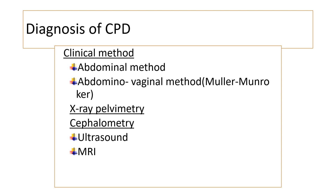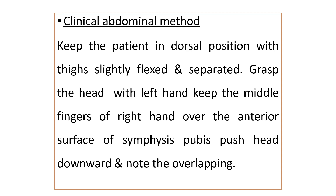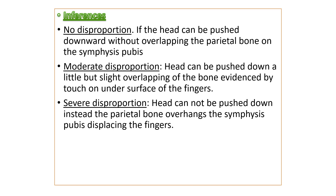In the clinical method, the first one is the abdominal method. In the clinical abdominal method, keep the patient in the dorsal position, slightly separate and flex the thighs, and grasp the fetal head using the left hand of the examiner. The middle finger of the right hand should be placed over the upper border of the symphysis pubis. By holding the fetal head with the left hand, push the fetal head downward into the pelvis, and note the inferences.